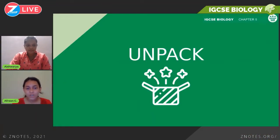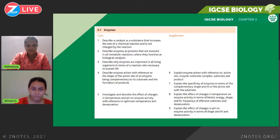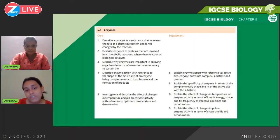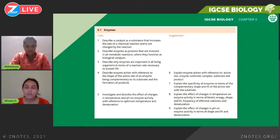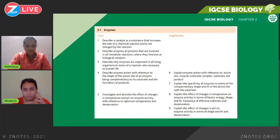We'll start with the syllabus. According to the syllabus, you need to know what a catalyst is, what an enzyme is, and why enzymes are important. You also need to know briefly how enzymes work and how they are affected by different physical conditions. If you're taking the extended course, you'll need to know how enzymes work in more detail, that enzymes are specific to their purposes, and how different physical changes affect enzyme activity.